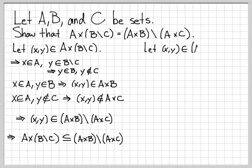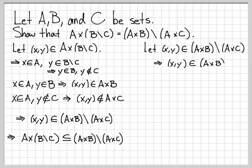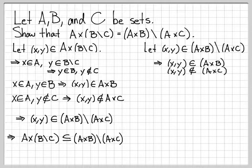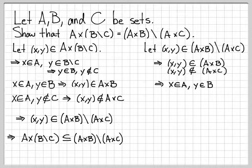Now let's do the other part. Let's choose an arbitrary element from the right side. So let (x, y) be an element of A cross B differenced with A cross C. What does it mean to be an element of that set? That means (x, y) has to be an element of A cross B — it has to be in the first set and it cannot be in the second set. That's what it means to be in the difference of these two things. If (x, y) is in A cross B, by the definition of the Cartesian product, that means x has to be an element of A and y has to be an element of B.